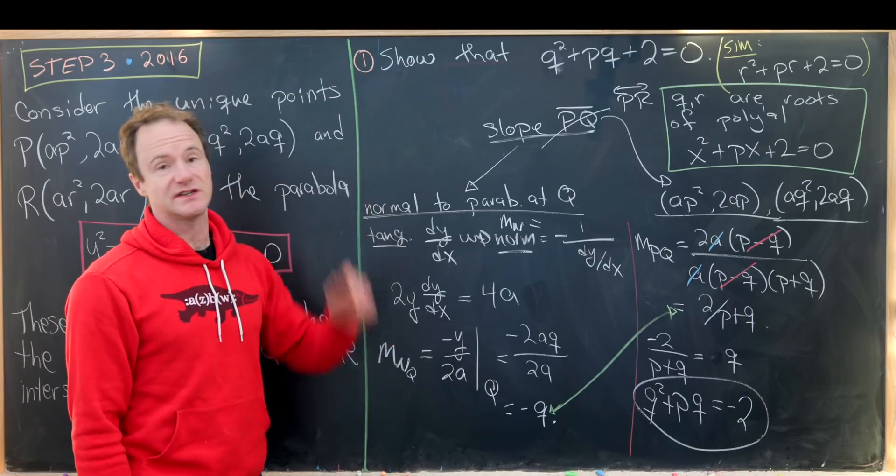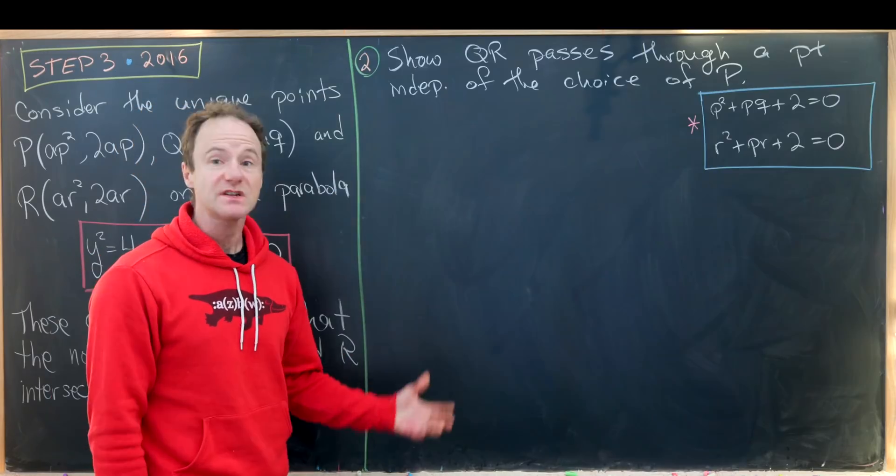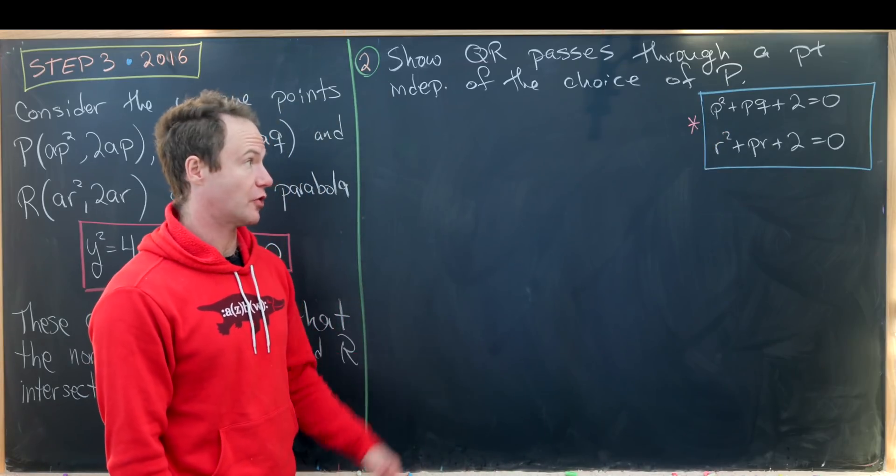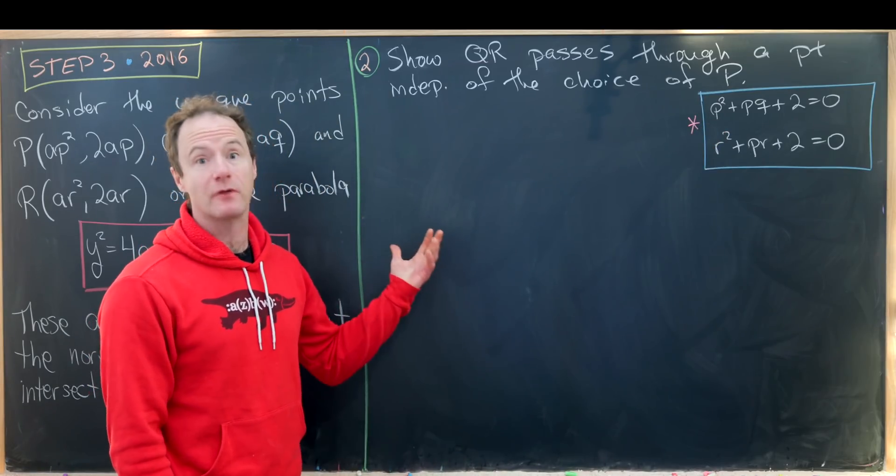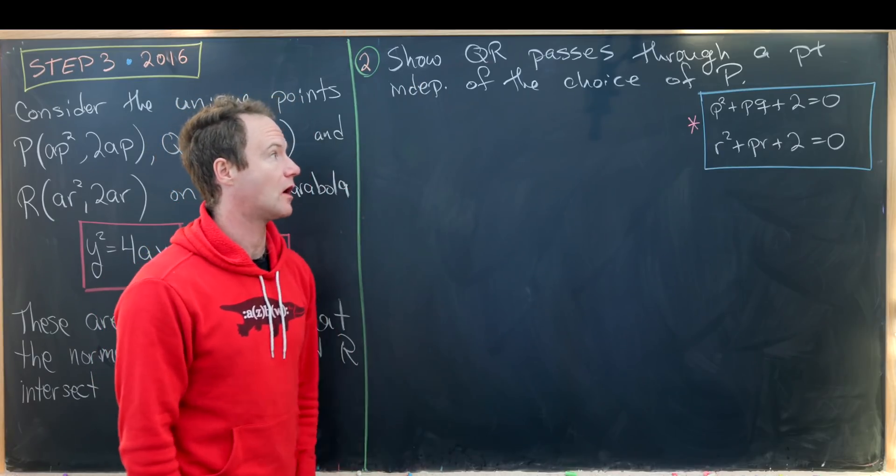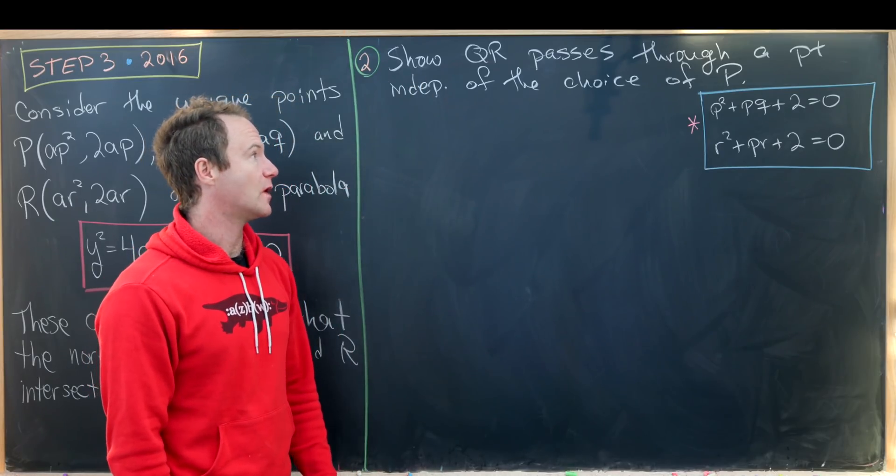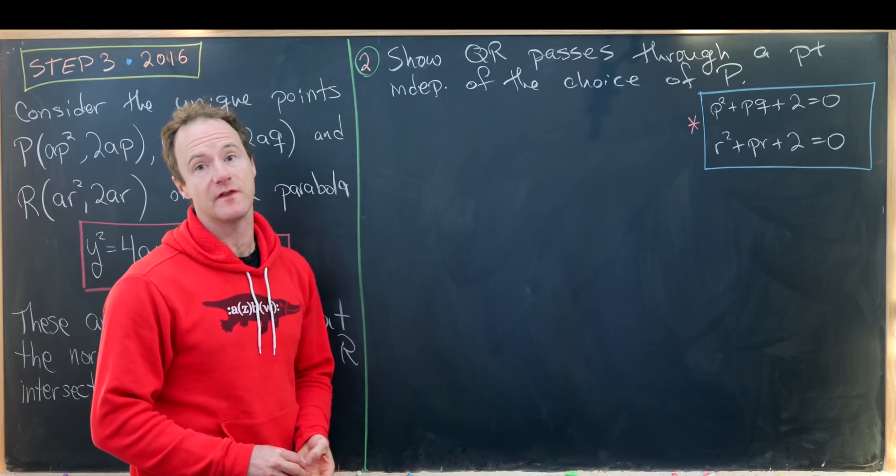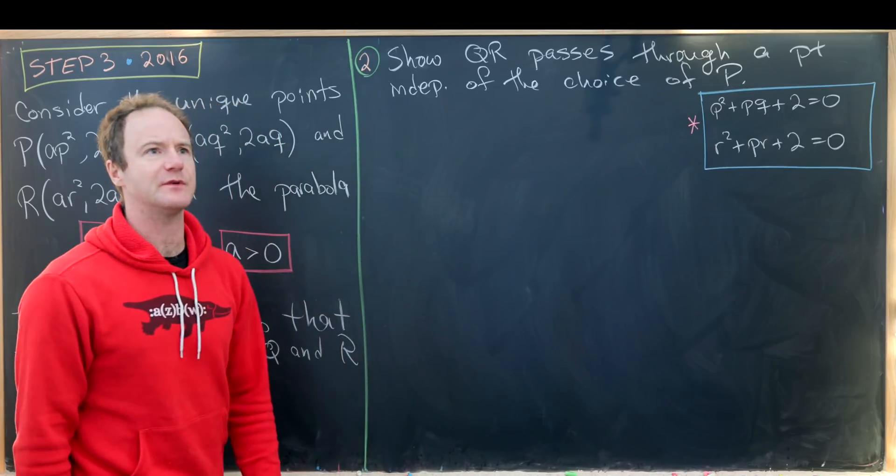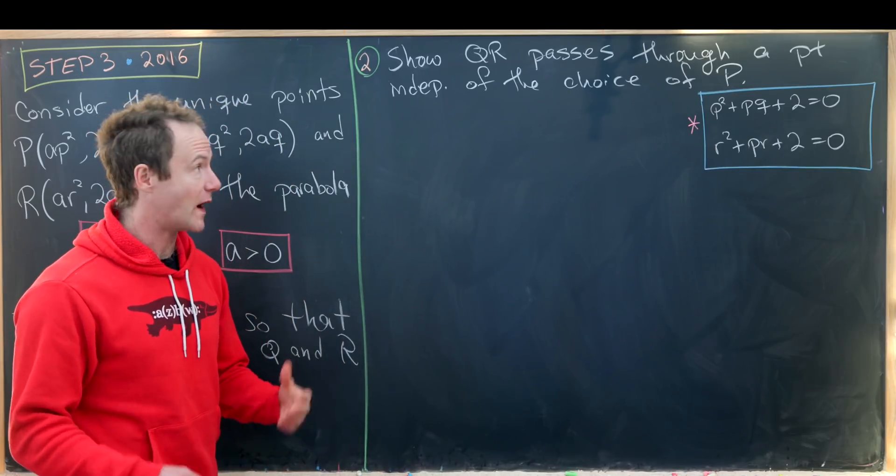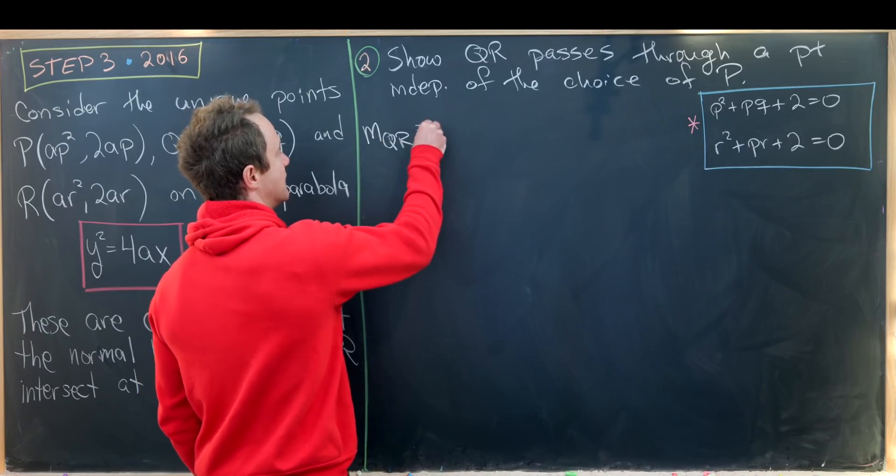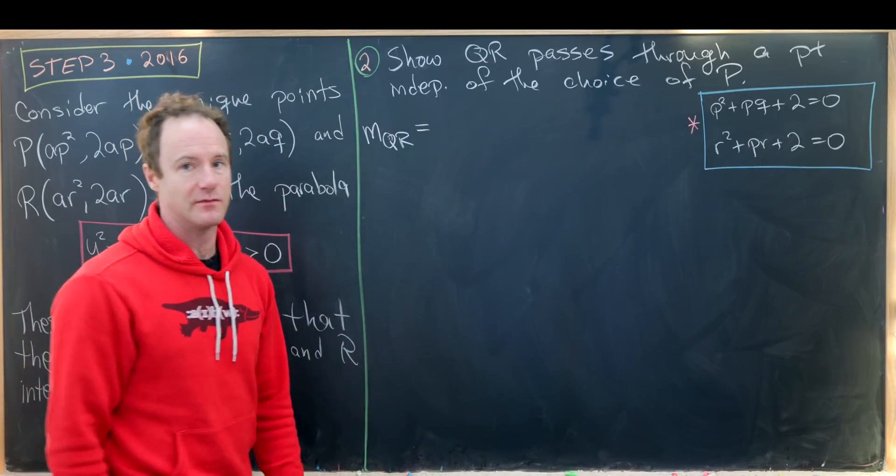Now let's move on to the second part of this problem. We just got done showing that P, Q, and R satisfied these two polynomial equations. That was our first part. Now we're going to show that the line QR passes through a point that is independent of the choice of P. That means we would probably be well suited to find the equation of line QR which means we need the slope of line QR.